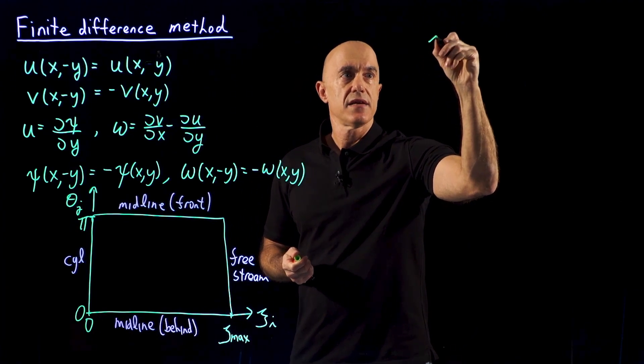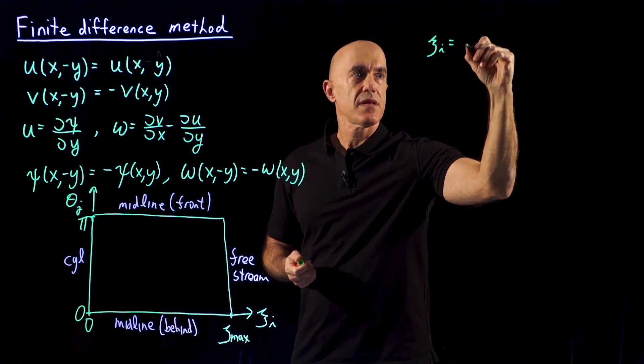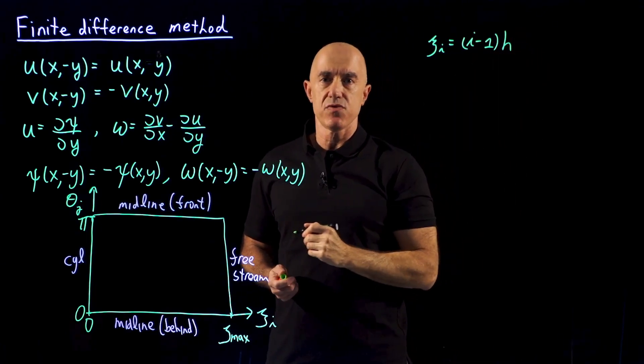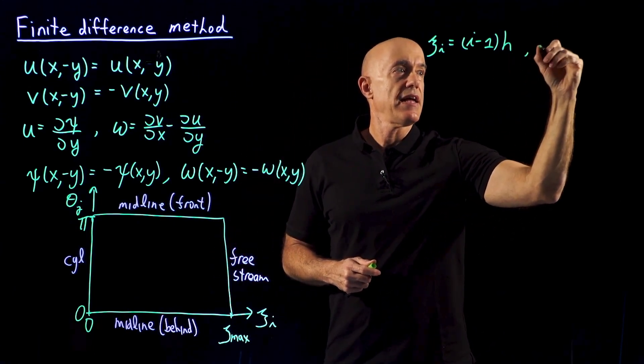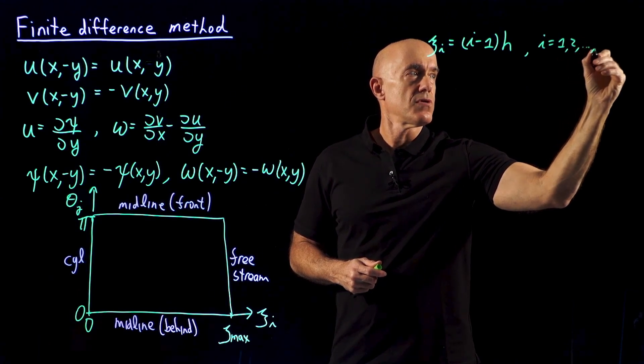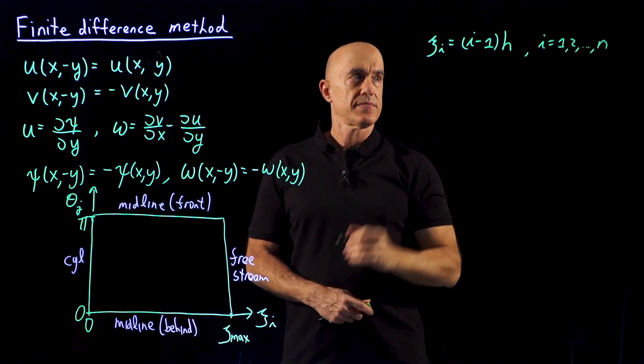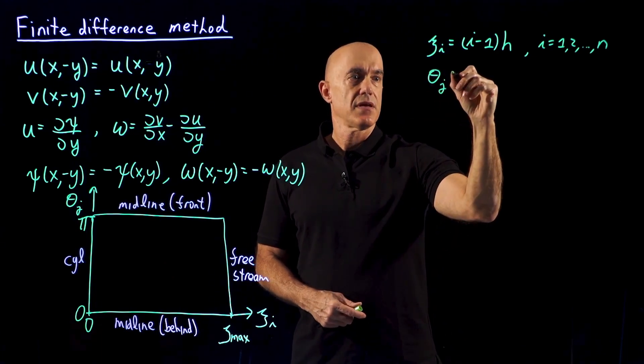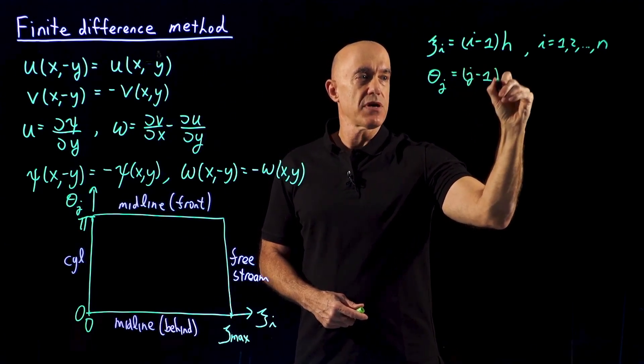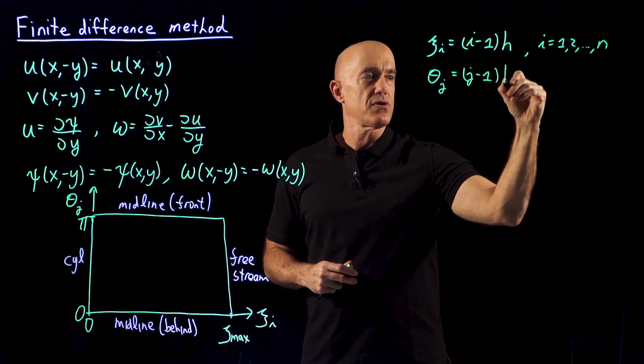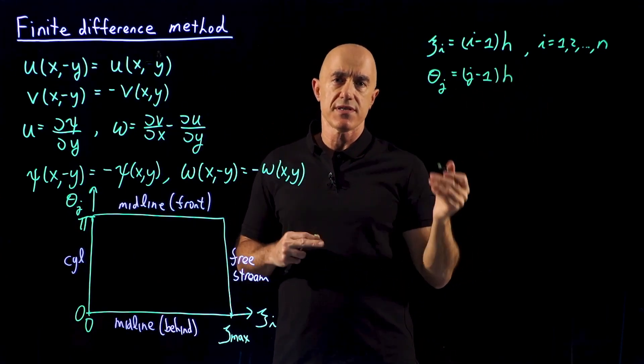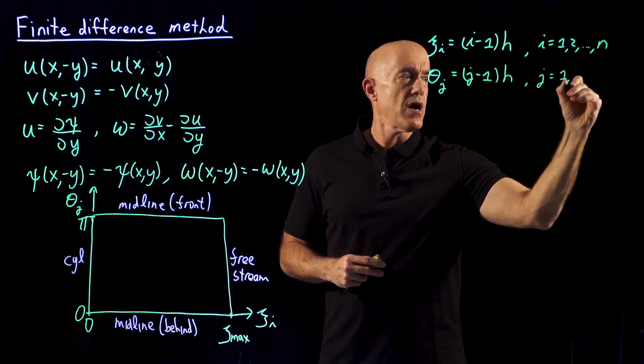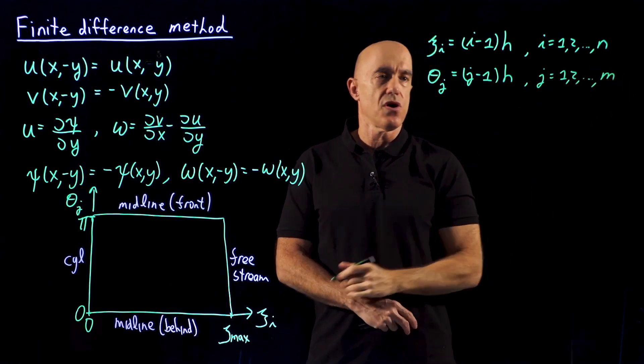We discretize. We take ξ_i = (i-1)h, and here we're going to set i equal to 1 to the maximum value n. Then we'll take θ_j = (j-1)h. And I'm going to use a square grid cell, so I'm going to use the same grid spacing in both the ξ variable and the θ variable. And here j will go from 1 to possibly some other number m.